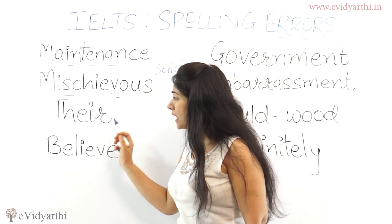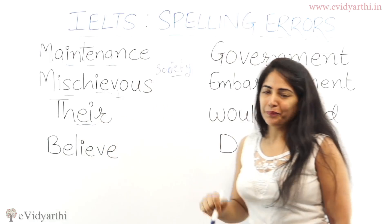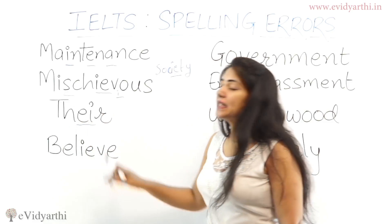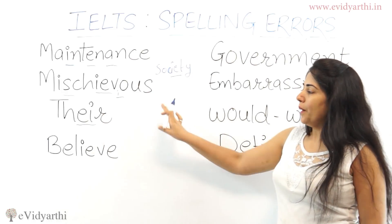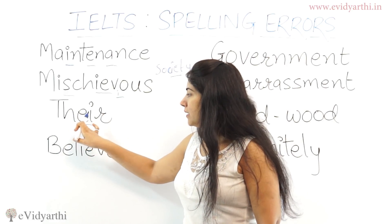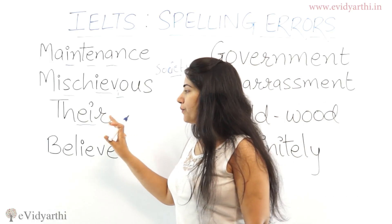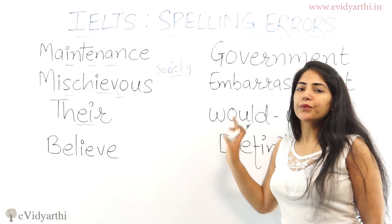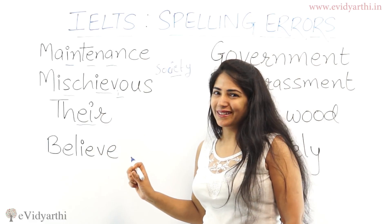Next is 'there.' Again, the same issue — Indians often get confused with 'EI.' Instead of writing 'EI,' students write 'IE,' which is incorrect. Please be very careful: it's 'EI' in 'there.' Also, students often get confused between three words: 'there' (T-H-E-R-E), 'their' (T-H-E-I-R), and 'they're' (T-H-E-Y apostrophe R-E). Be very careful with all three.